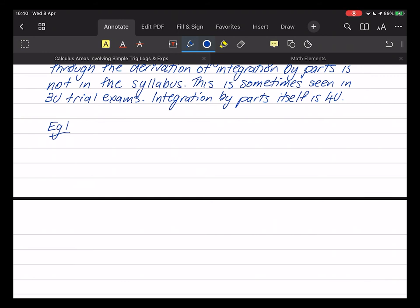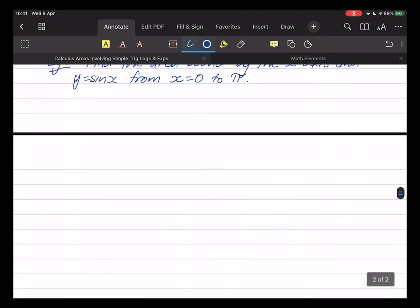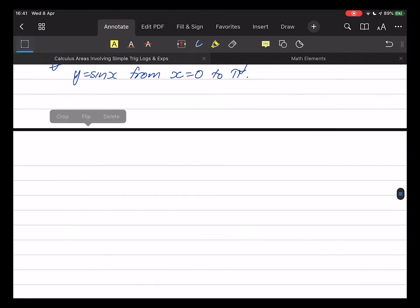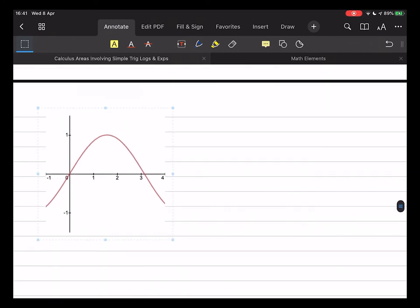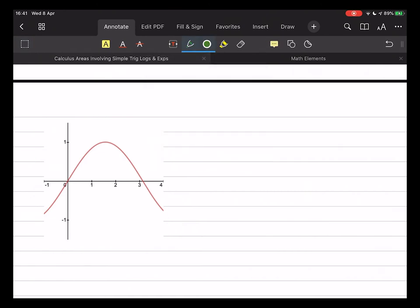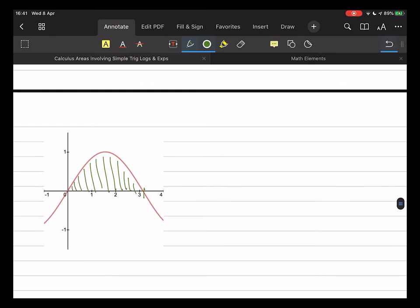Example one. Find area bound by the x-axis and y equals the sine of x from x equals 0 to pi. So that's what this thing looks like, and so the area that we are after is this one. Pi is 3.14, yes, that's what this thing represents, and it goes up to 1.